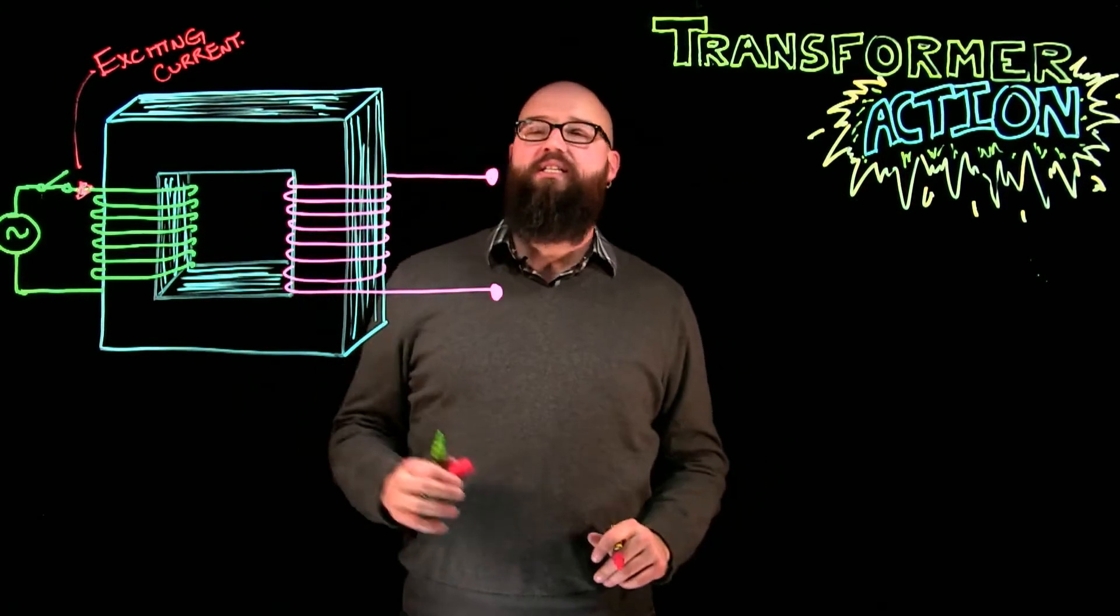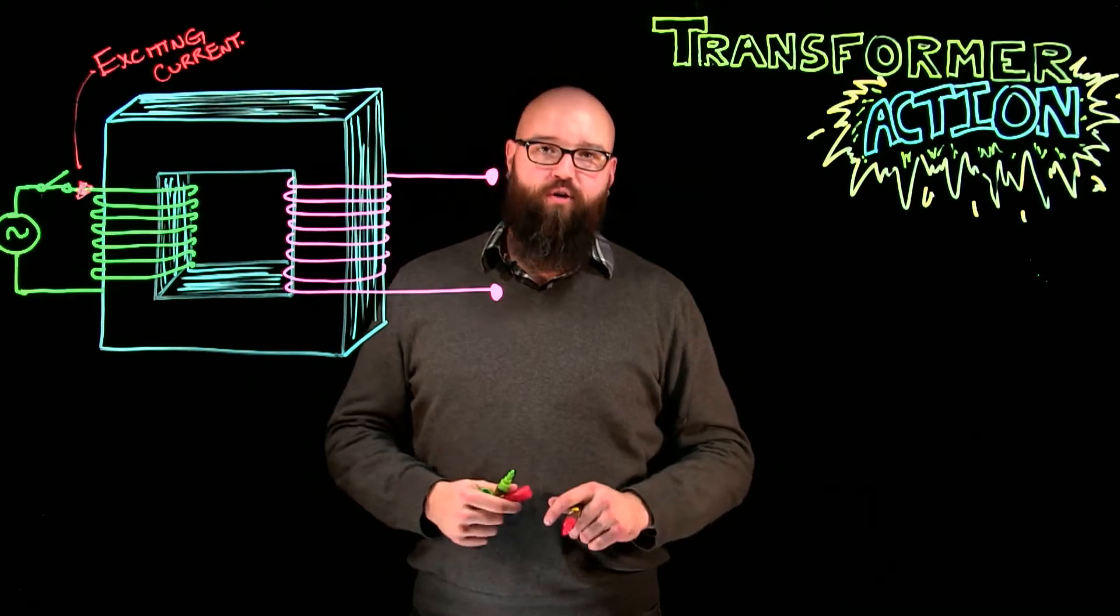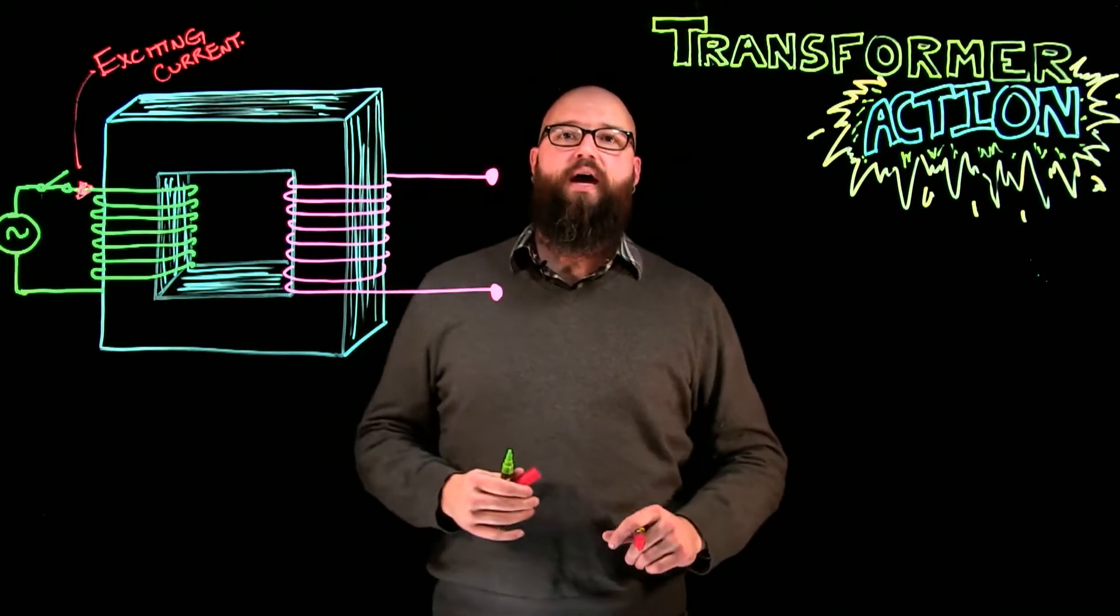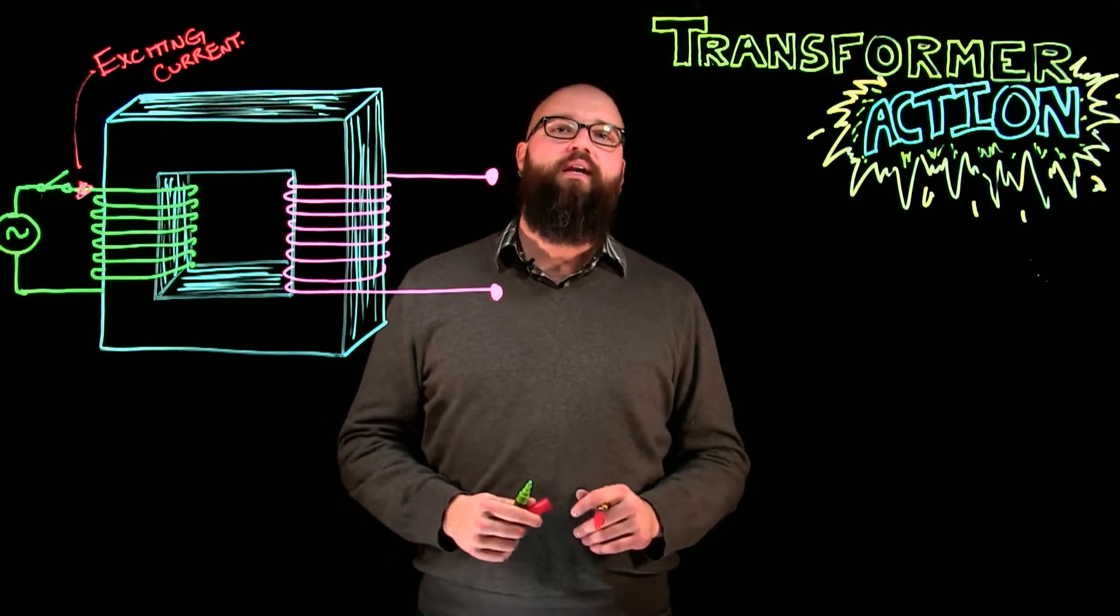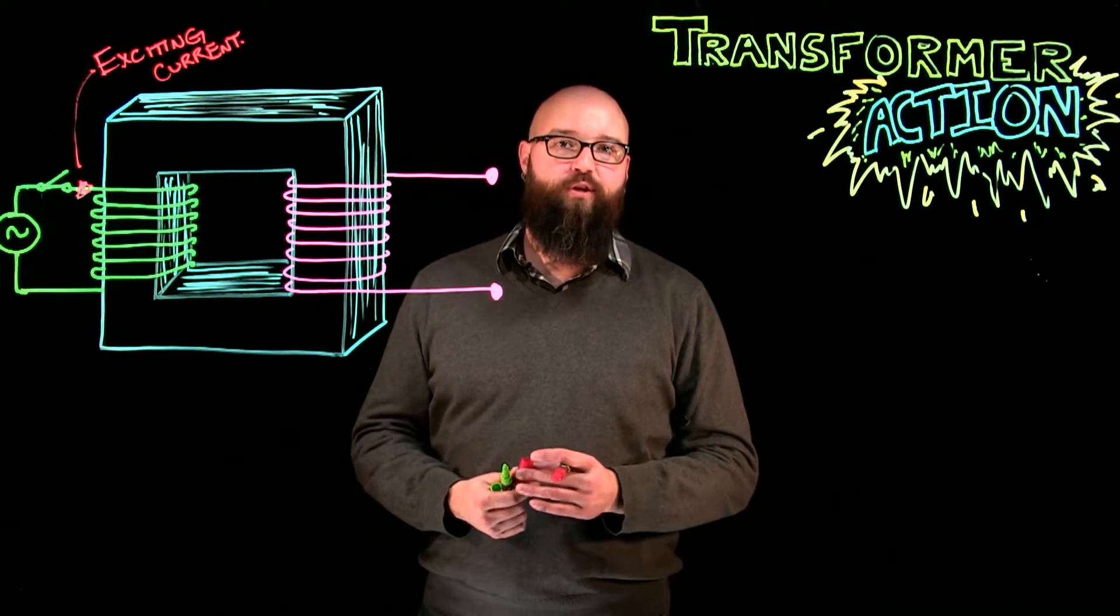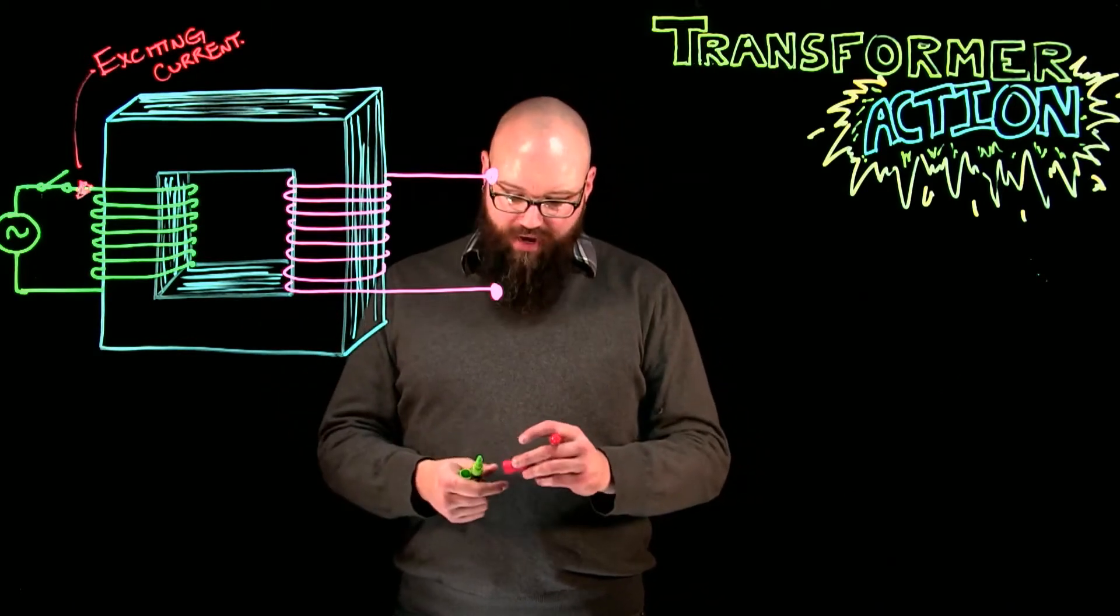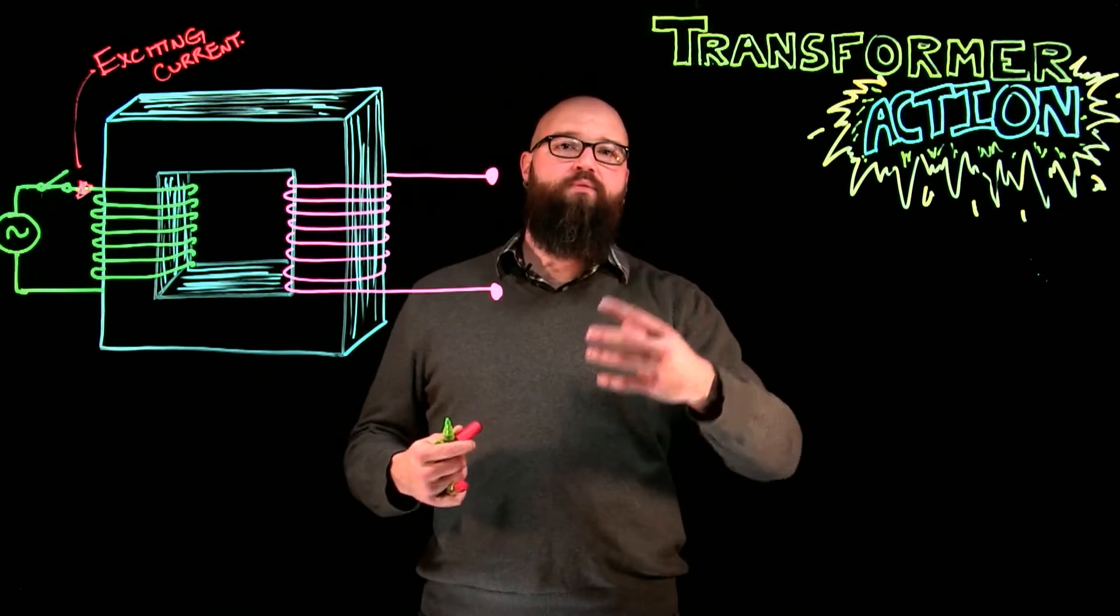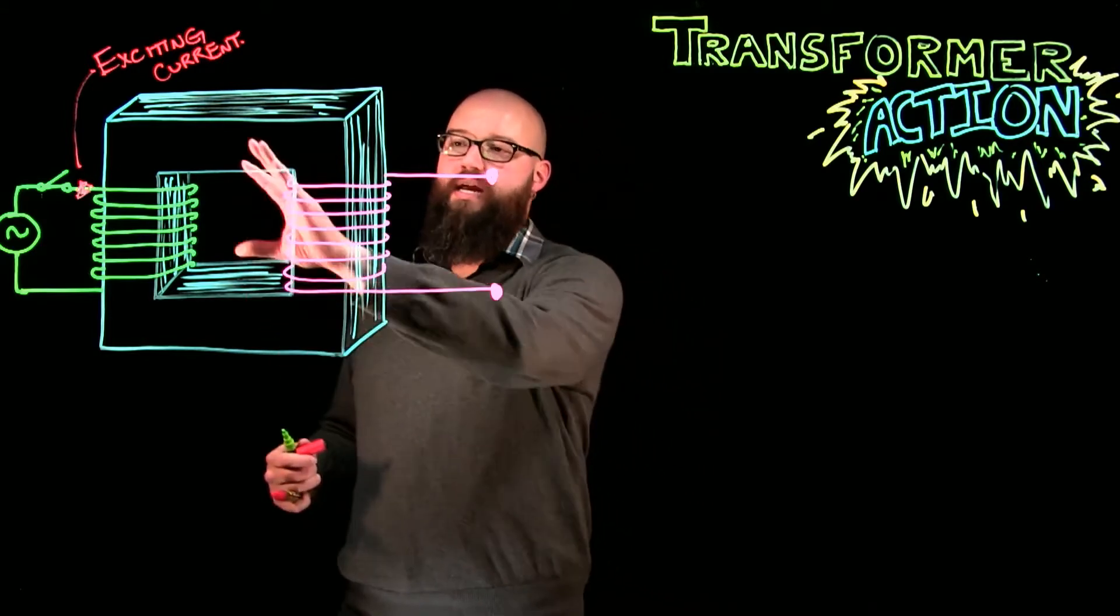Now, because of this exciting current, we know that if a current flows through a conductor, what's going to happen is, around that conductor, we're going to see magnetic lines of force build. And really, that's what's causing the counter-EMF in the first place. But,